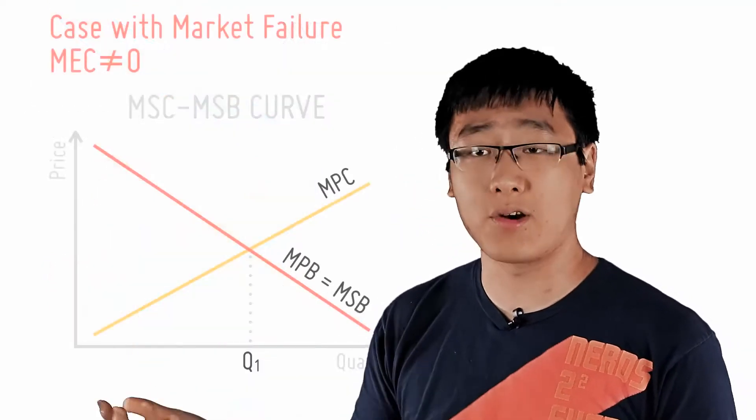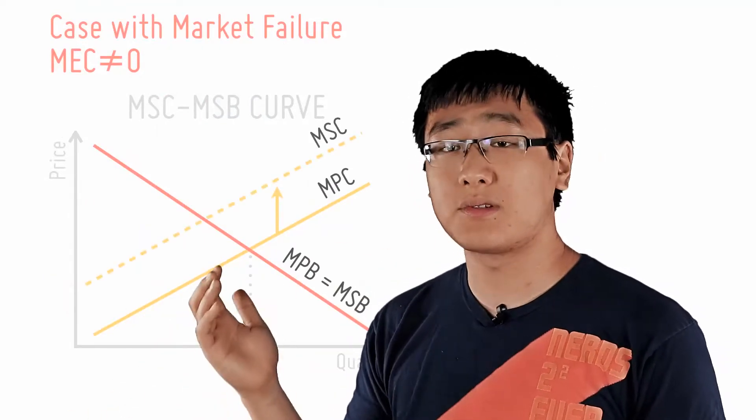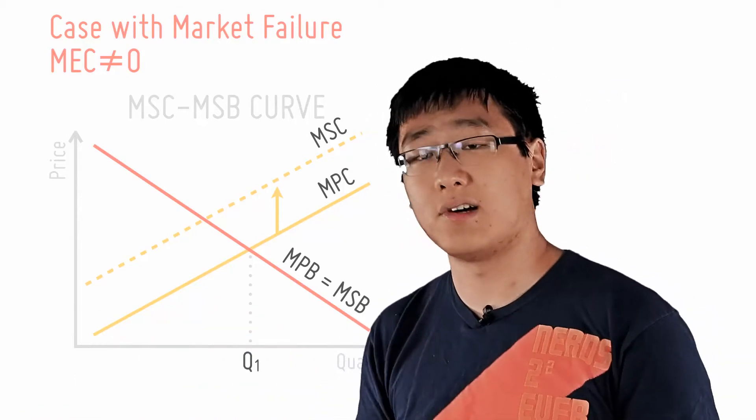So obviously, if there is external cost, then social cost will no longer be the same as private cost, since social cost equals private cost plus external cost.